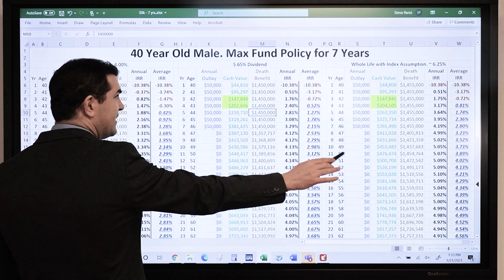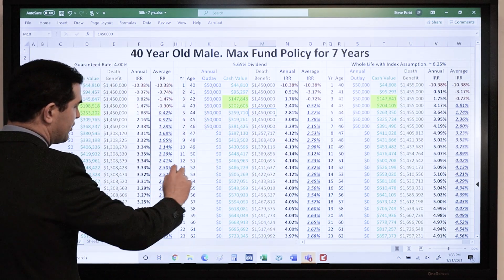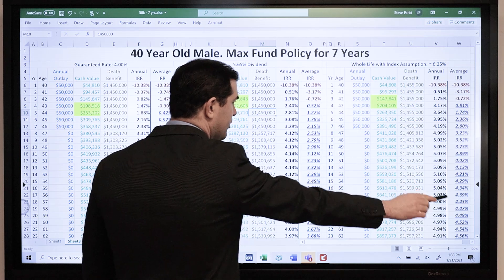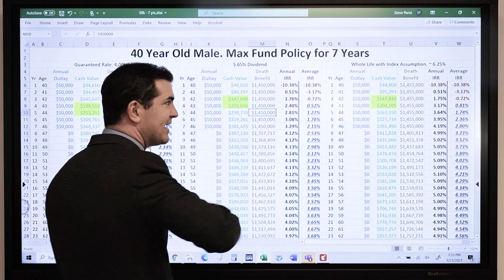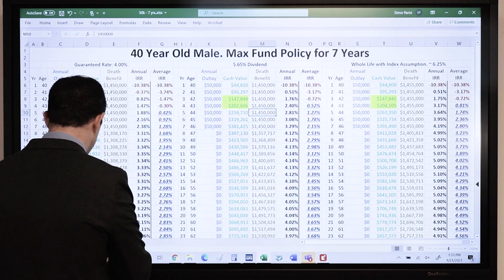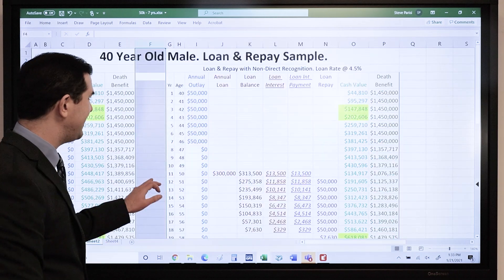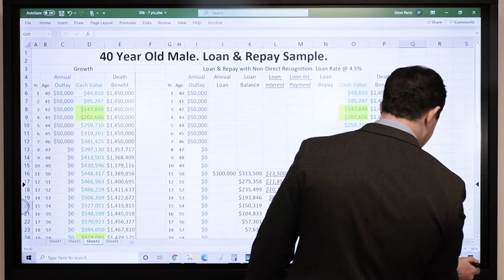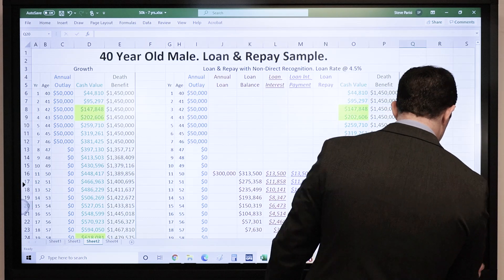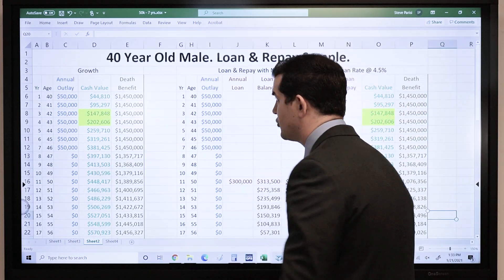So the safety, there we go. Safe, there's the guarantees, and can potentially do better. No risk, and I've got the tax benefits as well. Next thing, liquidity. When an opportunity pops up, I have access to the money.